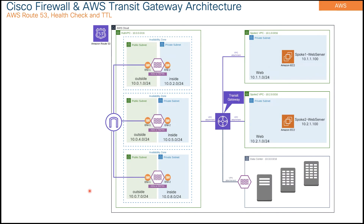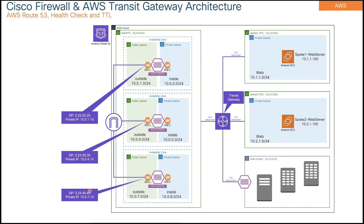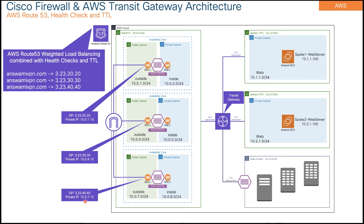On the external interface of your firewall — which is an ENI (Elastic Network Interface) — you will have a private IP address by default. Once your firewall is deployed, you can associate an Elastic IP address to that interface. I've associated an Elastic IP address to all the external interfaces of firewall 1, firewall 2, and firewall 3. On Route 53, I have enabled weighted load balancing combined with health checks, doing a health check on port 443.